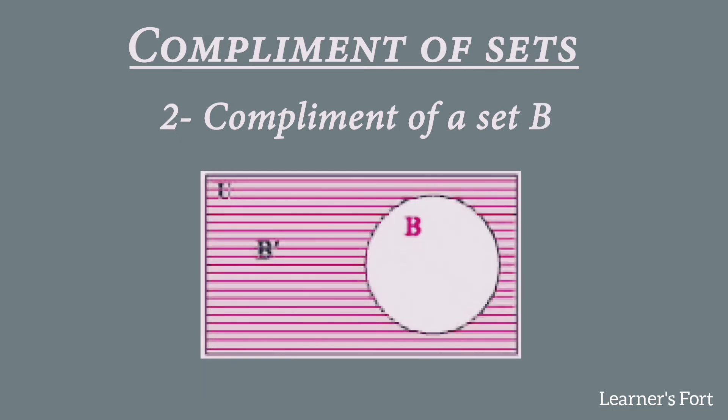Now in the second picture here you can see that we have taken the complement of a set B. Here I have drawn the circles of set B, and the shaded portion is the entire rectangle of the universal set excluding the circle of set B.